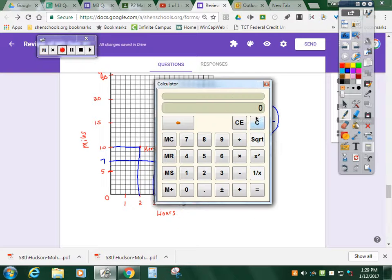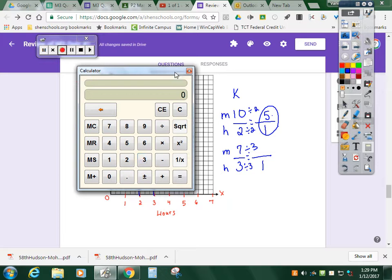You were allowed to use a calculator on the exam today. Seven divided by three—it's a repeating decimal, but I'm just going to say she can run 2.3 miles per hour.